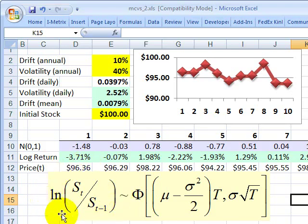With mean here of drift minus half of the variance over time, and volatility here of the volatility multiplied by the square root of time.